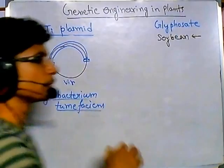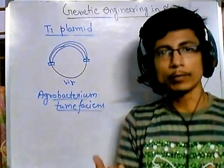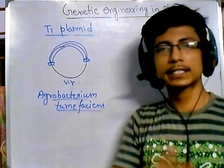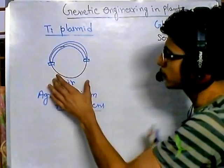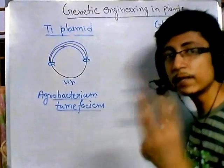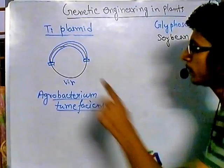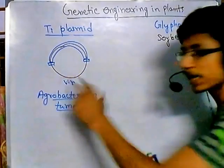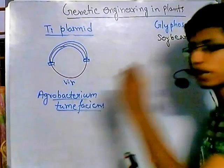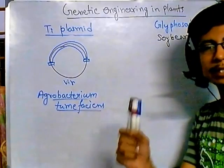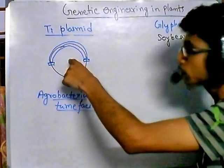Agrobacterium tumefaciens has a relationship with the plant — it gets nutrition and a home from the plant. The key idea is that we can use this Ti plasmid as a delivery vehicle for our desired gene, because this T-region can migrate from the bacterial cell directly into the plant cell in vivo — no in vitro technique required. Simply add bacteria to the soil near a wound and it will transfer genetic material.